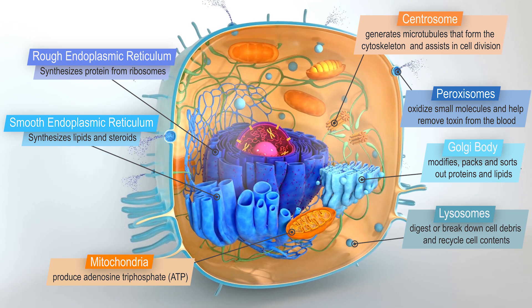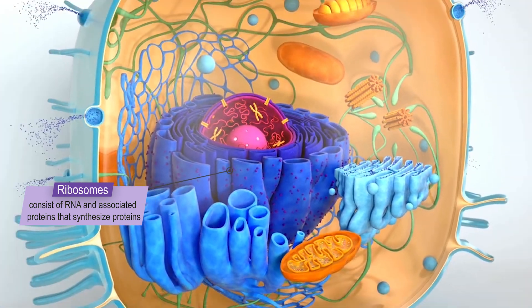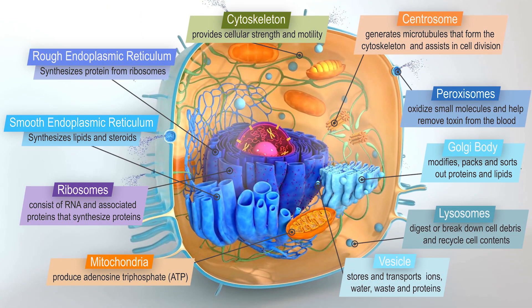Centrosome generates microtubules that form the cytoskeleton and plays an important role in cell division. Vesicle is a membranous sac that stores and transports ions, water, waste, and proteins. Other than the organelles, cytoplasm also contains cytoplasmic inclusions: ribosomes, which consist of RNA and associated proteins that function to synthesize proteins; and cytoskeleton, which is responsible for cellular strength and motility. Cytoplasm also contains a semifluid portion called cytosol, where dissolved substances are suspended.